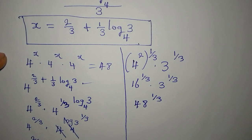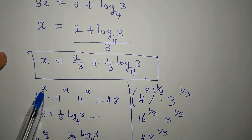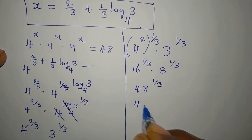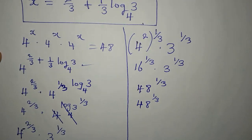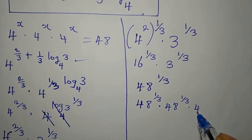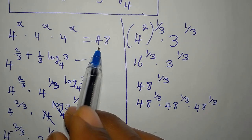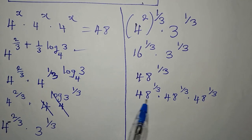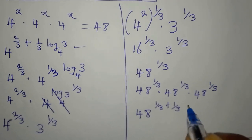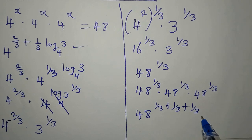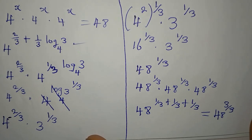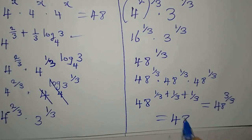Since 4 to the power of x gives us 48 to the power of 1/3, and we have this in three places, we have 48^(1/3) times 48^(1/3) times 48^(1/3). Because they have the same base, we pick 48 and add the powers: 1/3 plus 1/3 plus 1/3 equals 3/3. So we get 48 to the power of 1, which equals 48.